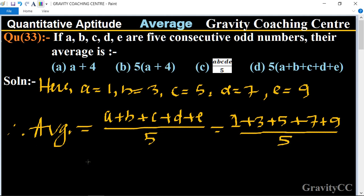So total sum equal to 25 upon 5. So it is cancelled by table of 5, 5, 5.